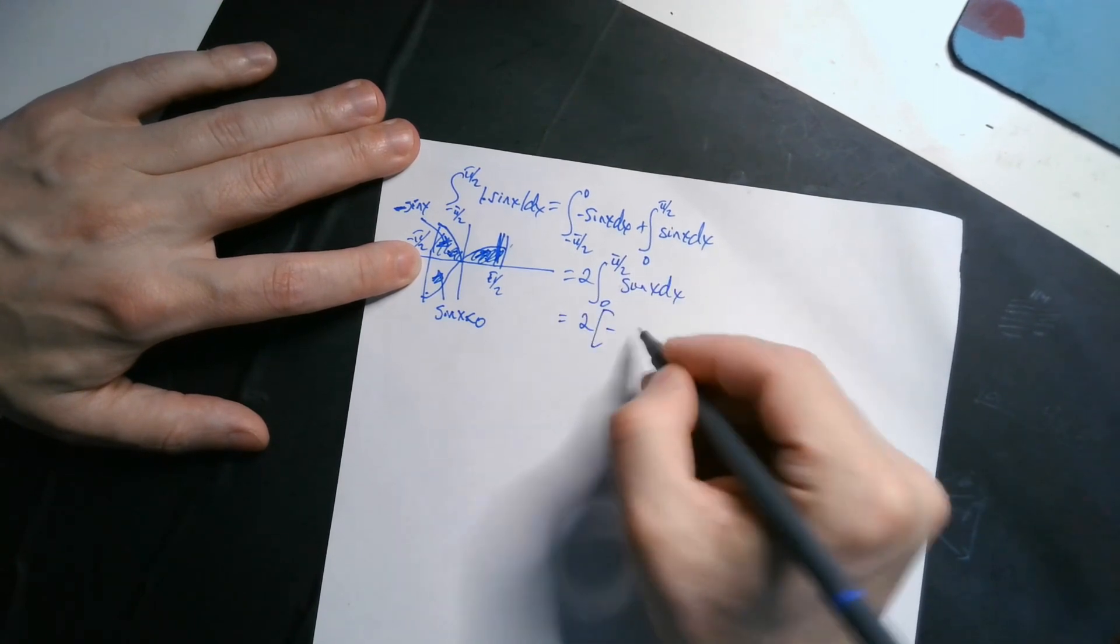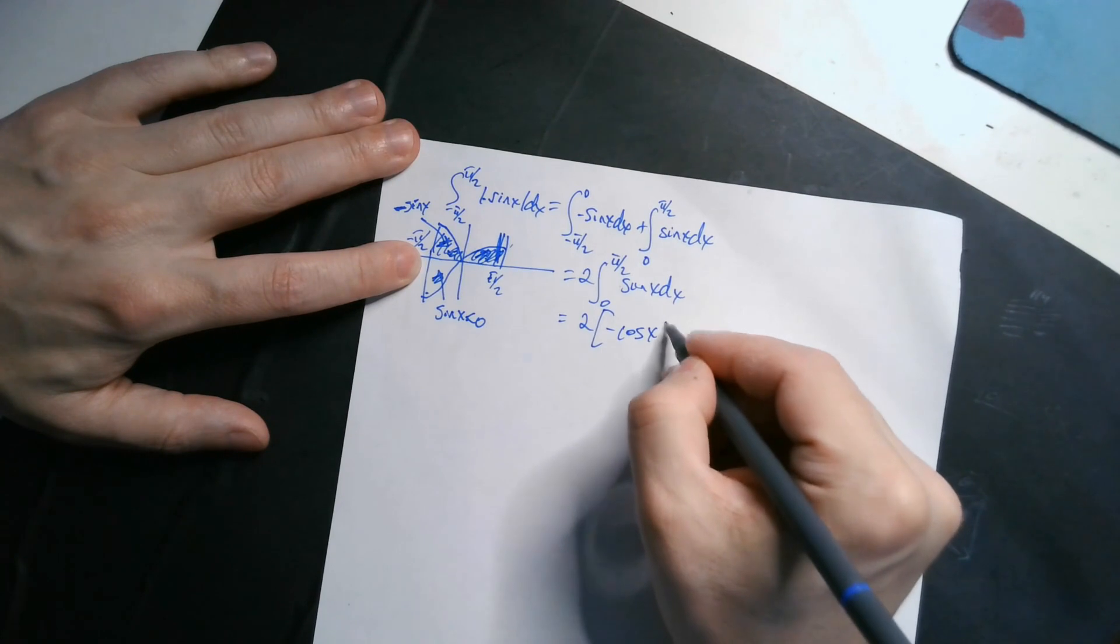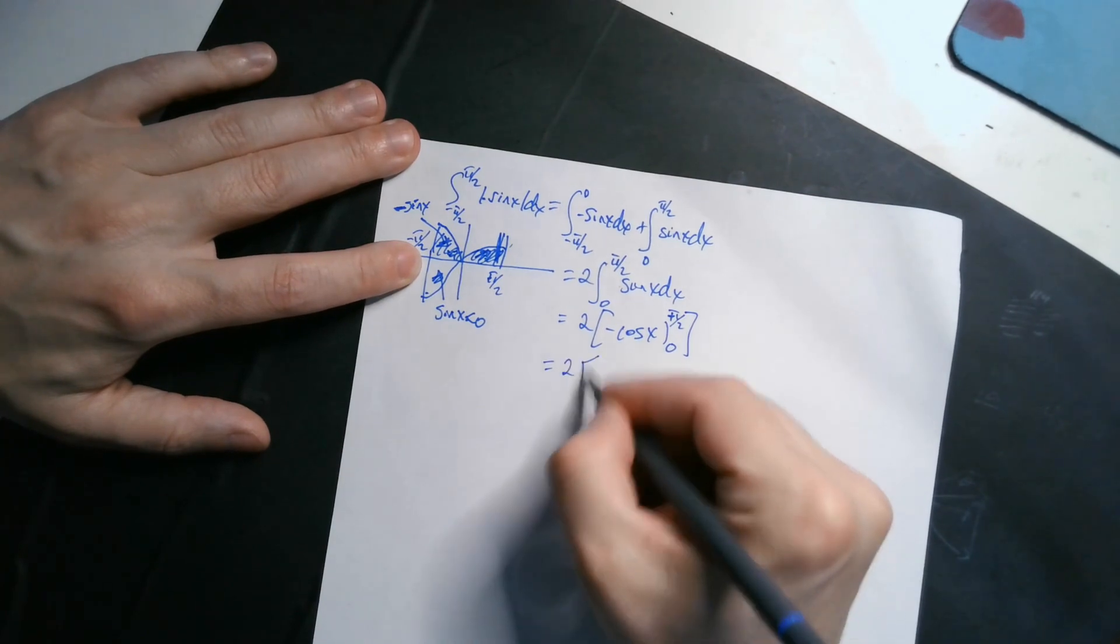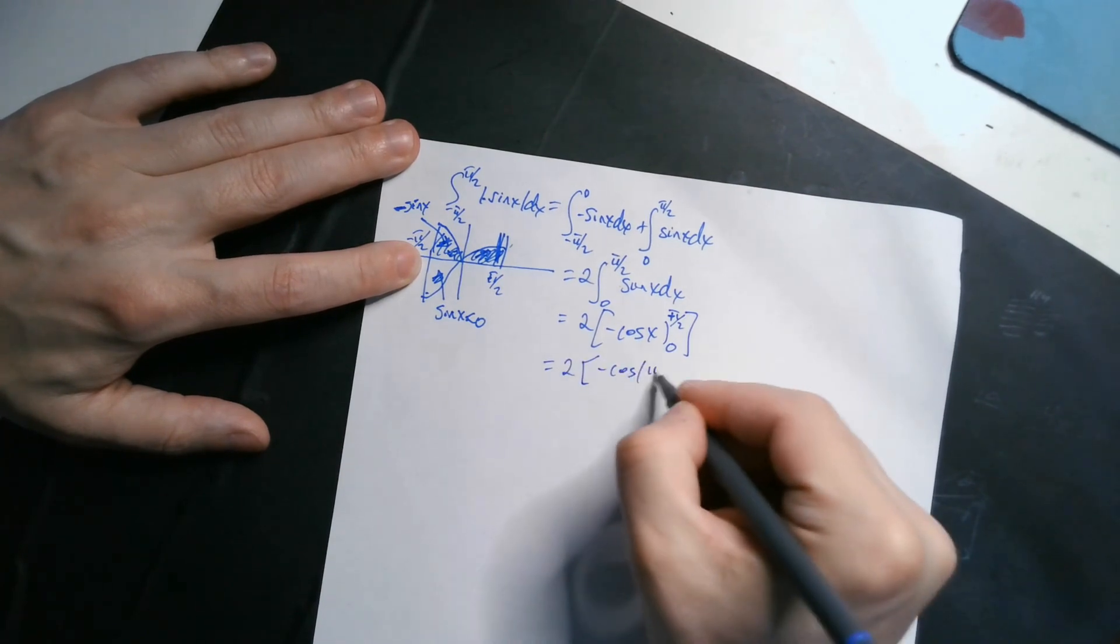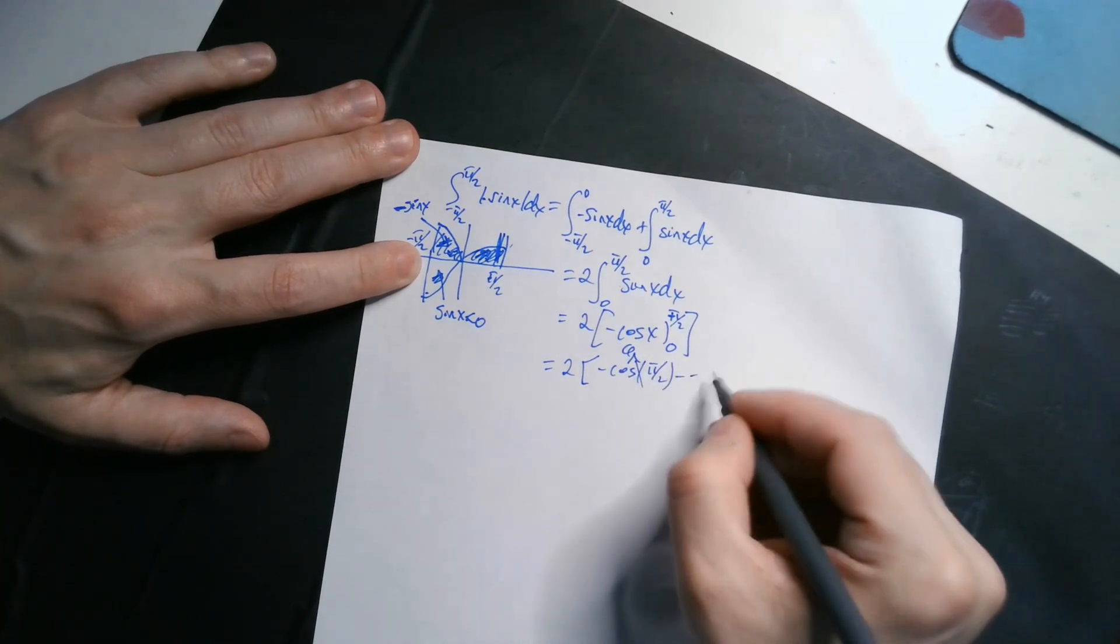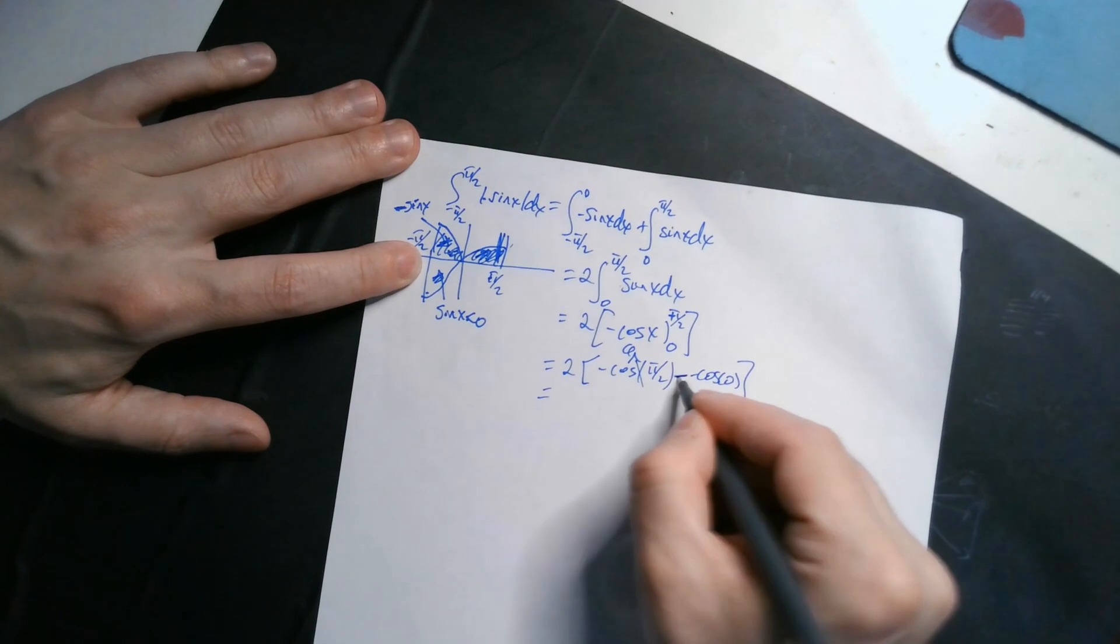It's going to give you 2. Then you're going to have negative cosine of x evaluated here between pi over 2 and 0, like that. Then you just plug in. So 2 negative cosine of pi over 2. Now this here is 0 from the unit circle, top of the unit circle, minus a negative cosine of 0.